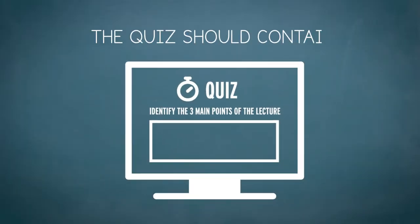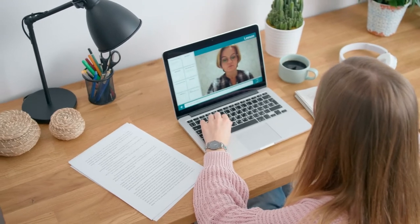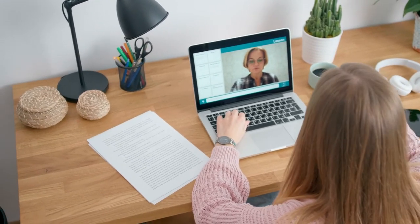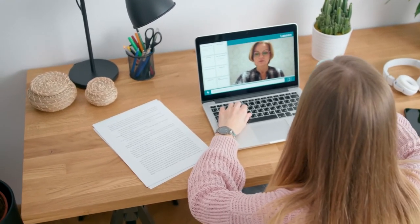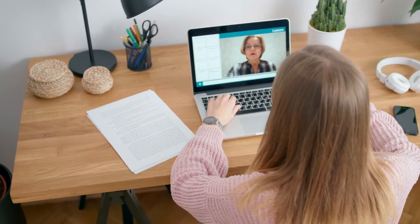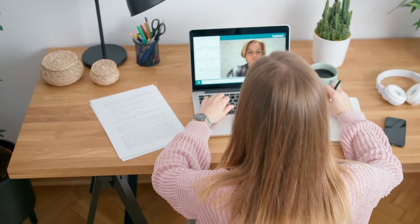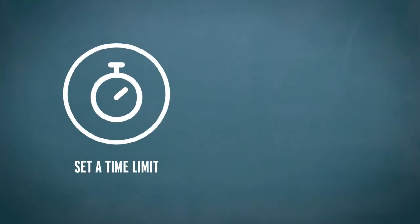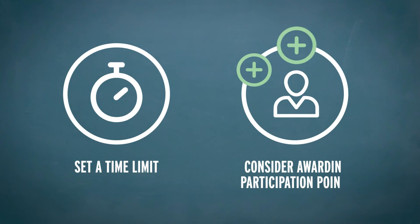The quiz should contain a short essay question asking students to identify the three main points of your lecture. Explain that the goal of the activity is to help students self-assess and improve lecture listening skills. Set a time limit for the quiz and consider awarding participation points.